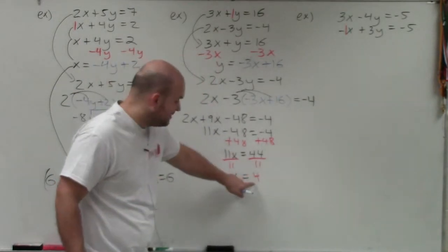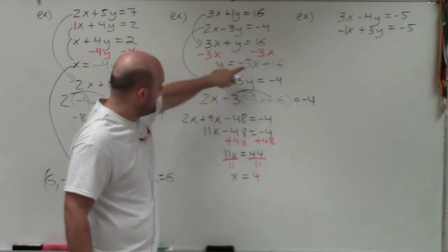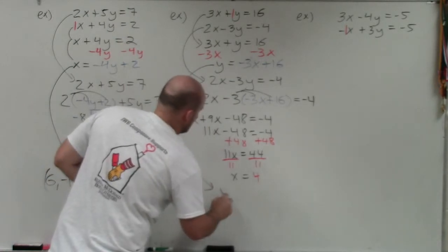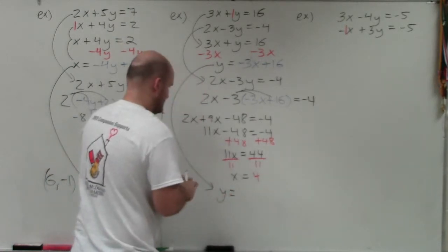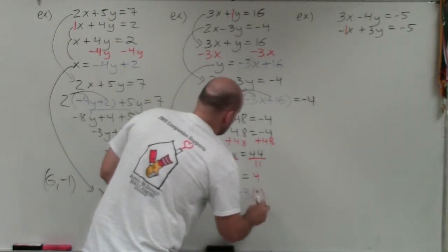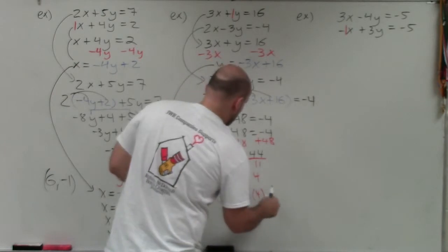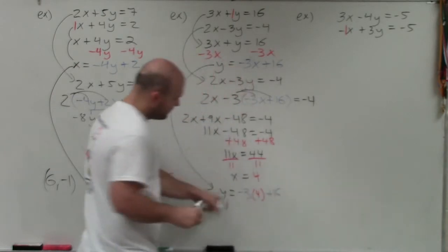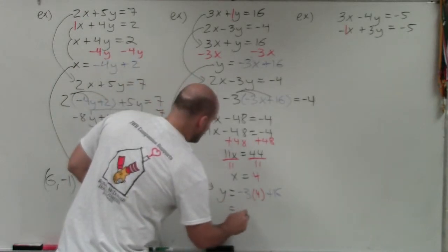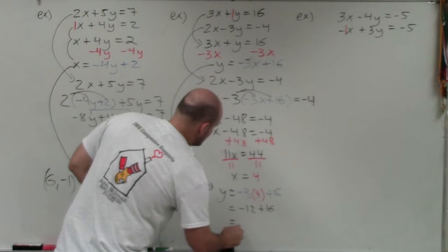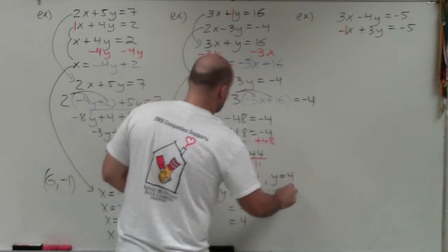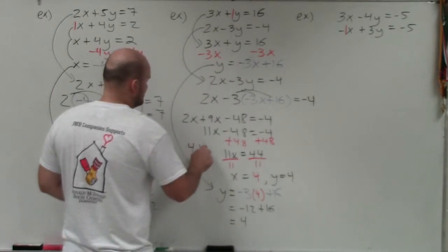Now I know x equals 4, so I go back to the solved equation and plug in 4 for x. y equals negative 3 times 4 plus 16. Negative 3 times 4 is negative 12, plus 16 equals positive 4. So x equals 4 and y equals 4, or as a coordinate point, (4, 4).